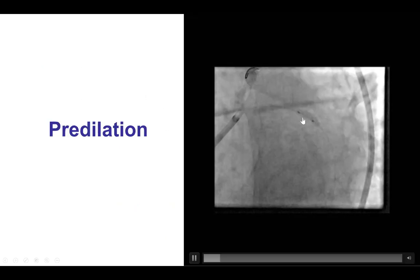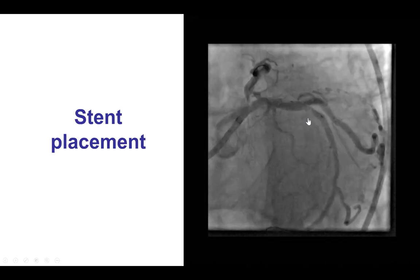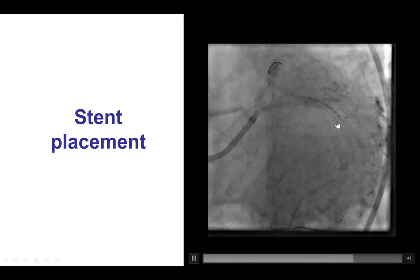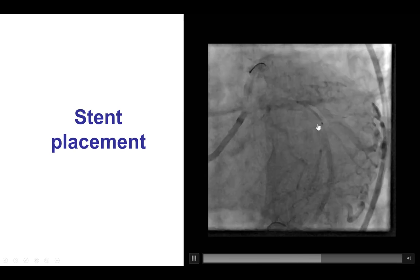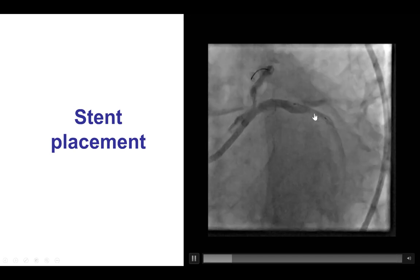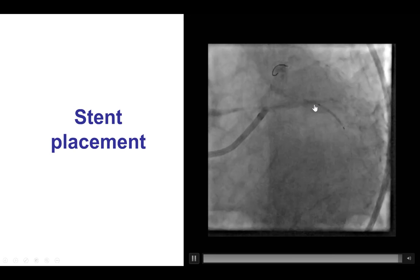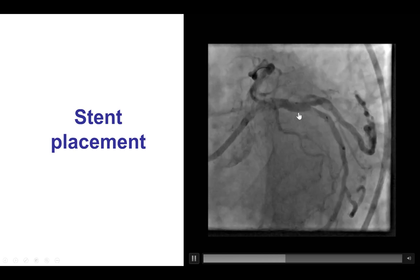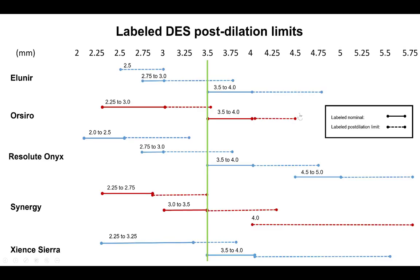The lesion was predilated and then a stent was placed across the ostium of the obtuse marginal branch. Retrospectively, the stent length was a little short because we should have at least 6-8 mm of stent proximal to the bifurcation to enable performance of the proximal optimization technique. When there is a size discrepancy between the distal and the proximal main vessel, we need to make sure we choose a stent that can be expanded to the diameter of the proximal main vessel.